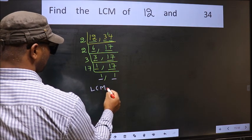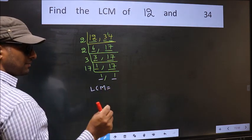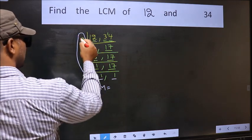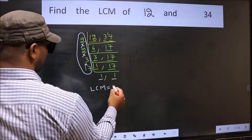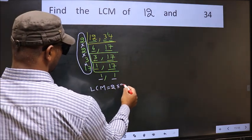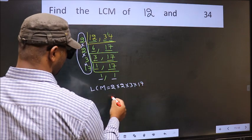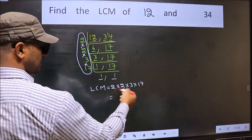So our LCM is the product of these numbers. That is 2 into 2 into 2 into 3 into 17. So let us multiply these numbers.